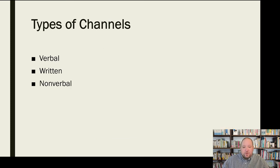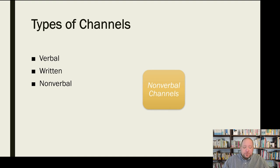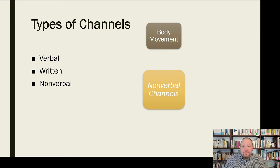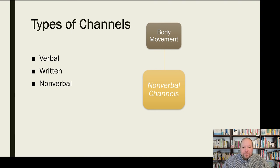Then we have nonverbal communication, which is sort of everything else. Verbal and written communication have to do with the words and language we're using, while nonverbal communication involves everything else. Nonverbal channels include body movement — a broad category that includes facial displays, facial expressions, eye behavior, whether we're looking at someone or looking away, our posture and gestures. This is what we call kinesics.